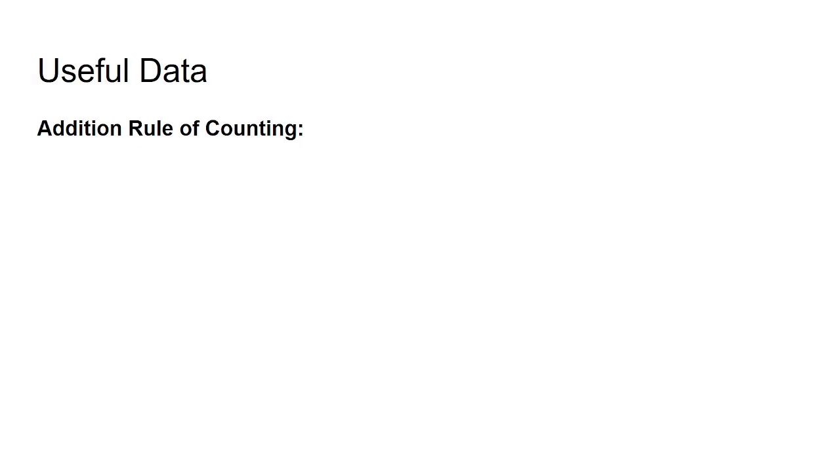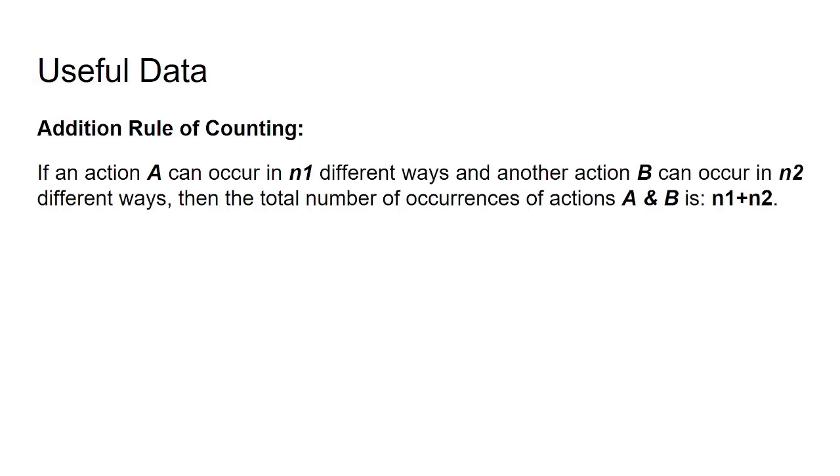I will briefly discuss what is the addition rule of counting. If an action A can occur in n1 different ways and another action B can occur in n2 different ways, then the total number of occurrences of actions A and B is n1 plus n2.